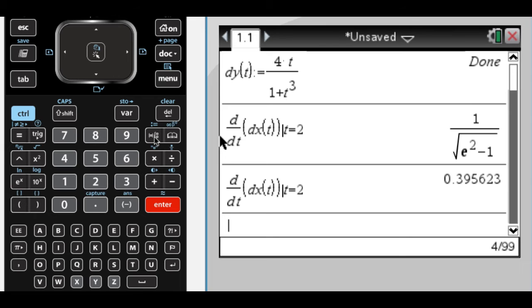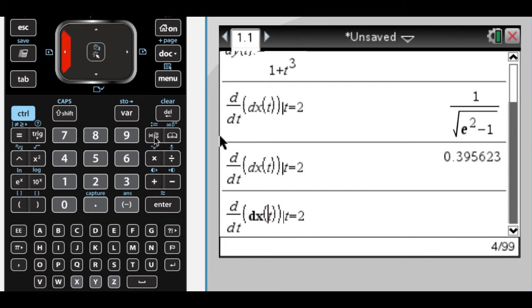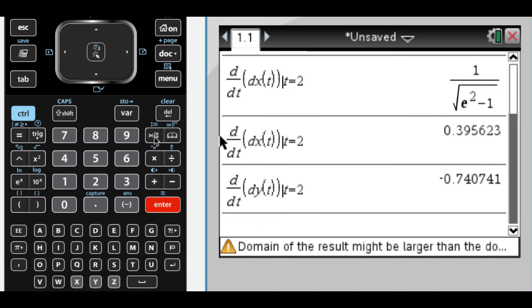And then I also want to repeat that process for dy. So I'm going to just edit this. So I get both of those, and then I would write those down as a vector. So 0.396, negative 0.741. That's my acceleration vector.